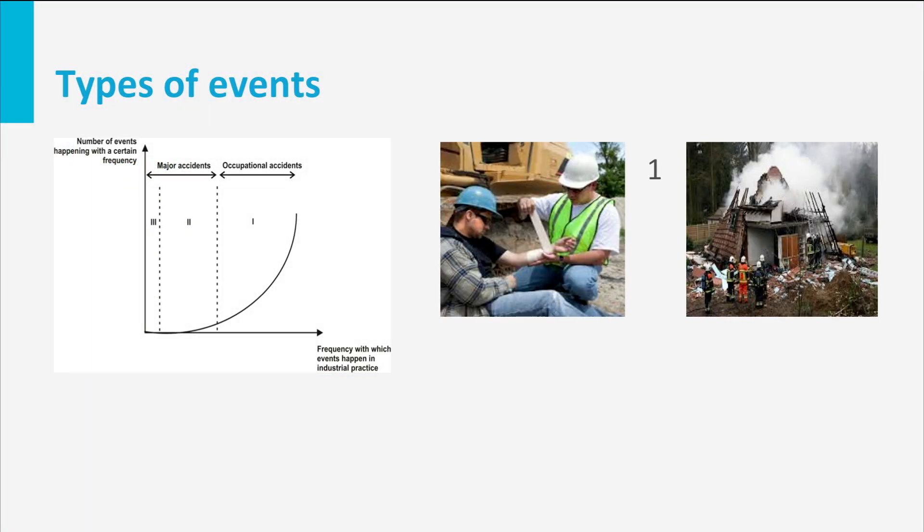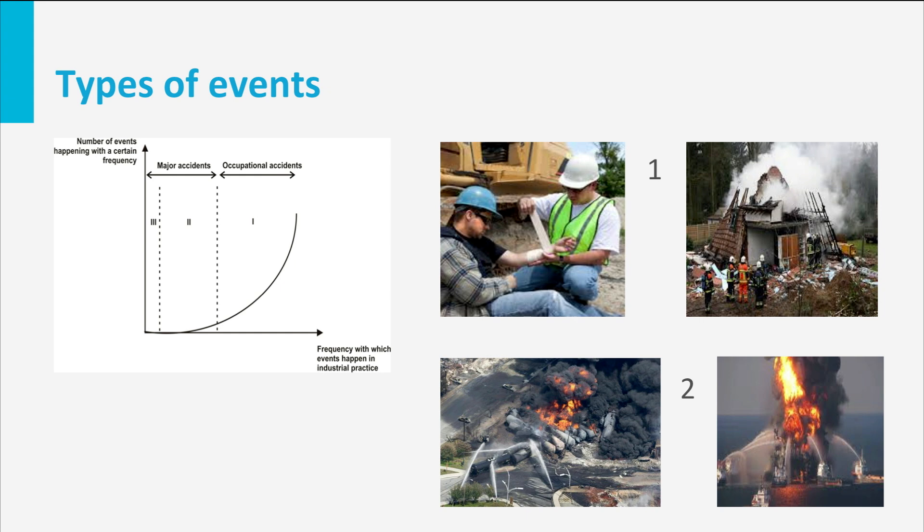Type 1 unwanted events can be regarded as occupational accidents, for example, accidents resulting in the inability to work for several days, accidents requiring first aid and others. Type 2 events can be categorized as major accidents, for example, multiple fatality accidents, accidents with huge economic costs, etc.